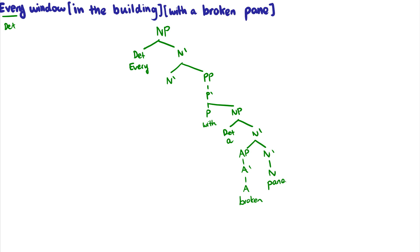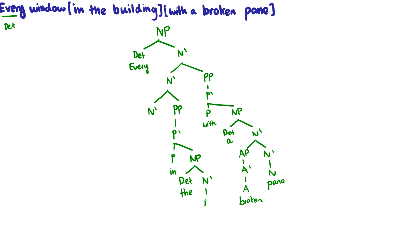Now we have to do the second adjunct, 'in the building.' Again, daughter of an N-bar, sister of an N-bar. 'In' is the head of the prepositional phrase, and 'the building' is the complement. 'The' is a determiner, so that's the specifier of the NP — daughter of an NP, sister to an N-bar. And 'building' is the head noun of the NP.